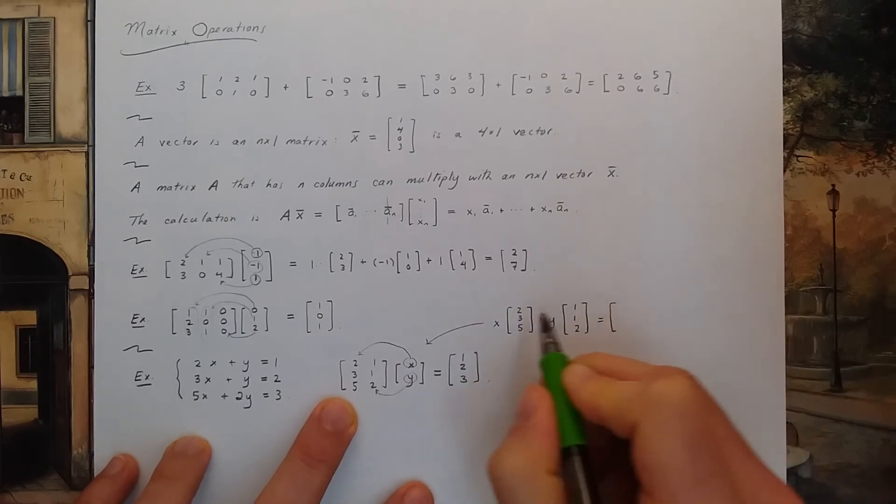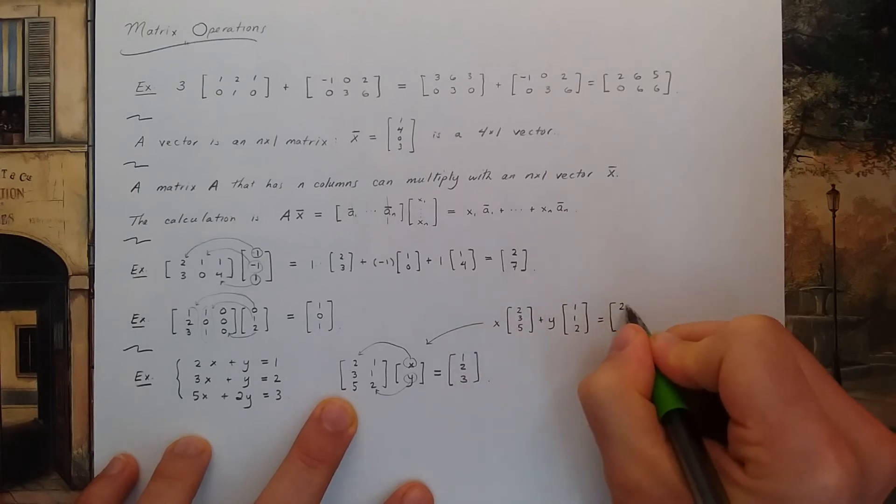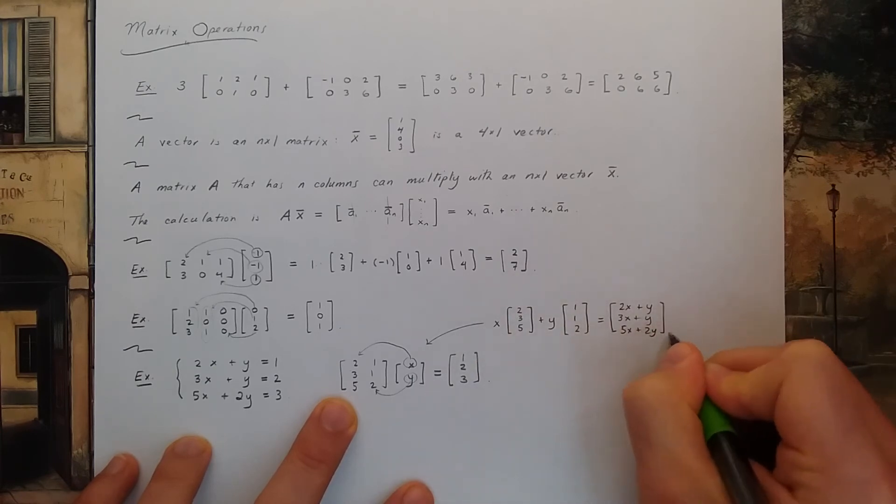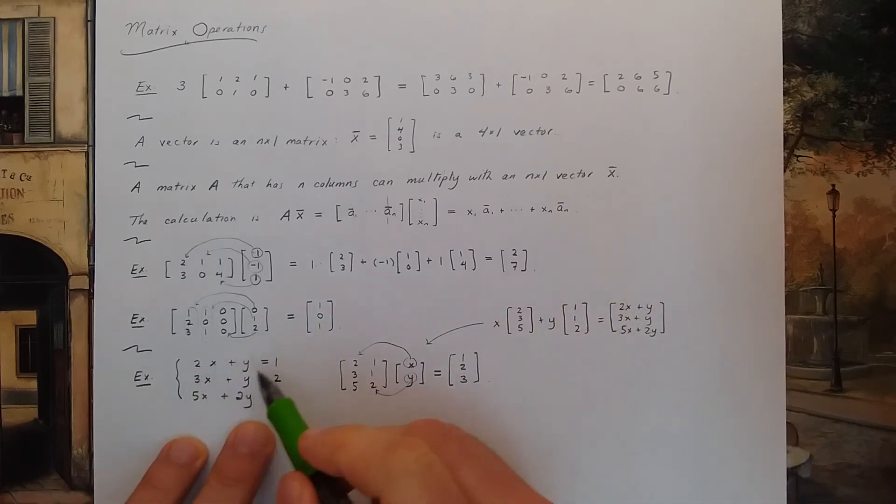And if you add these vectors together, you get 2x plus y, 3x plus y, and then 5x plus 2y, which is exactly this side of the system.